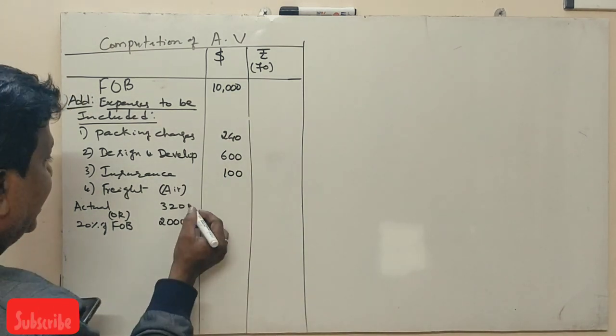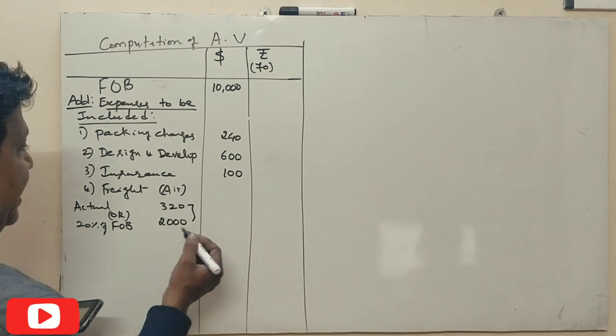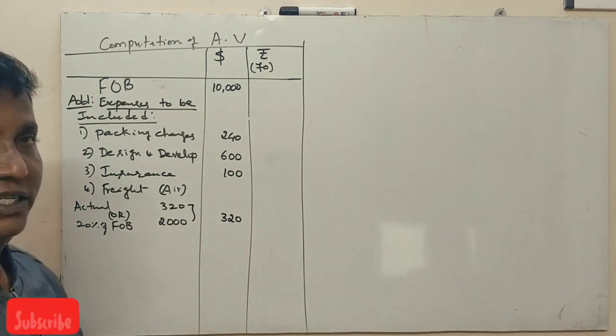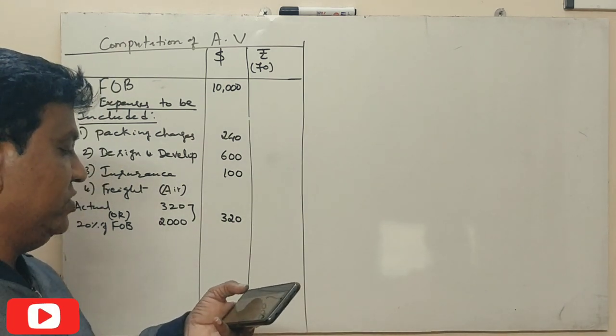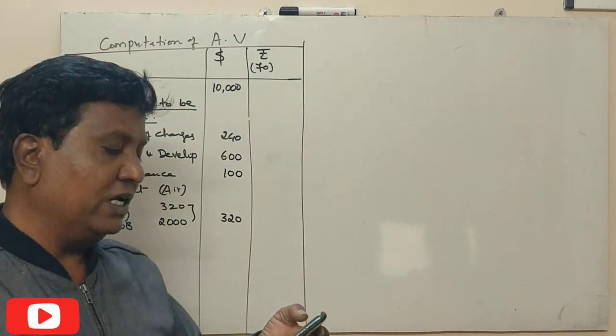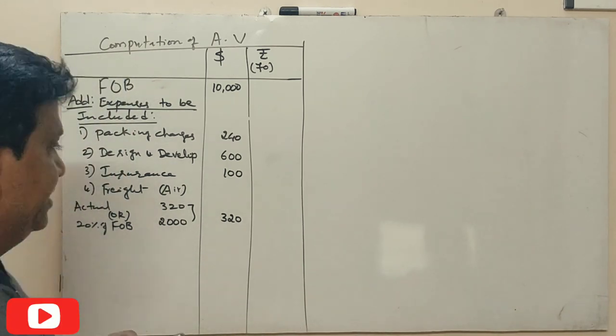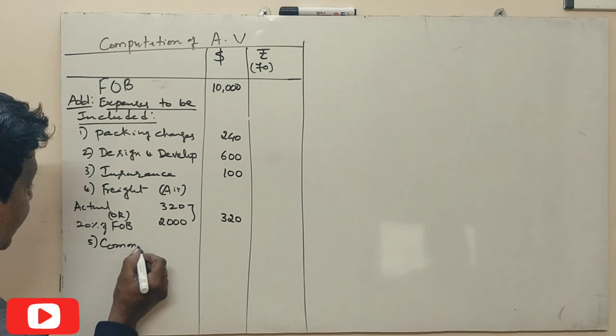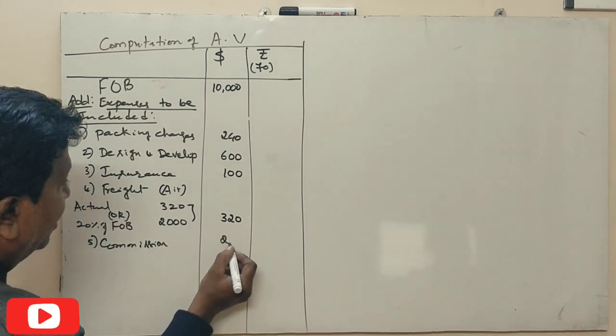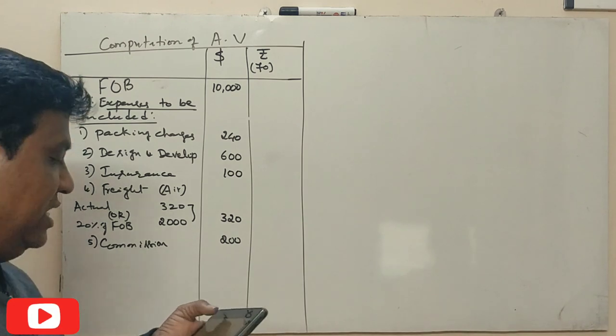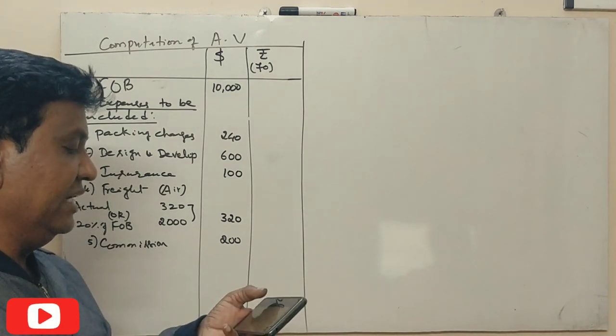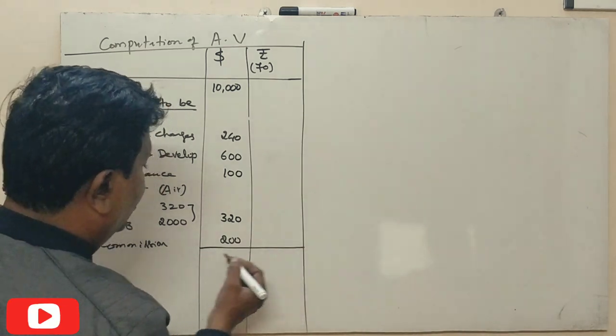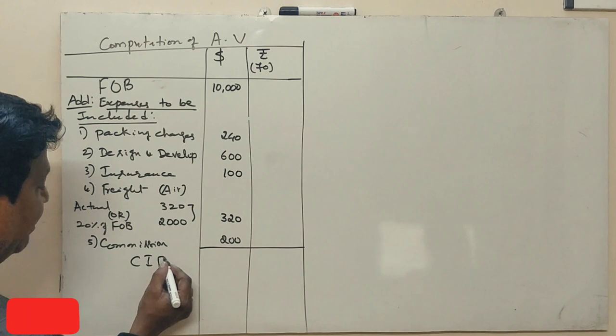Next, commission paid to a broker who arranged the transaction 200 dollars. Exchange rate as per 70 rupees. Now this is the CIF value.